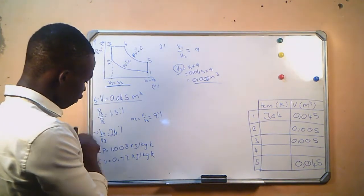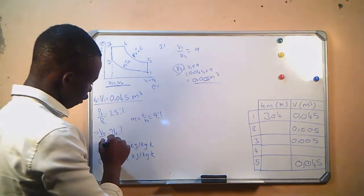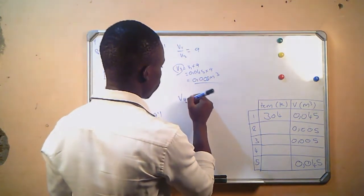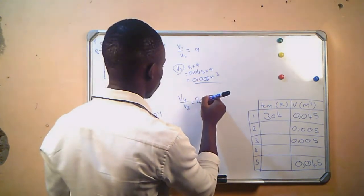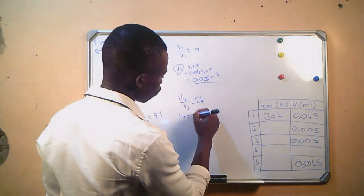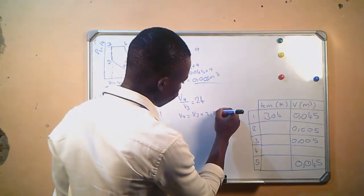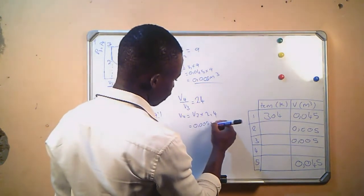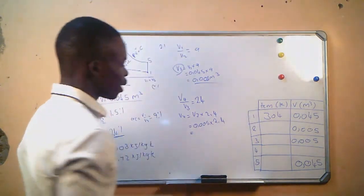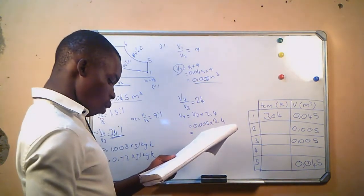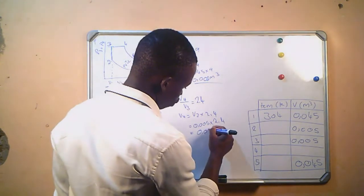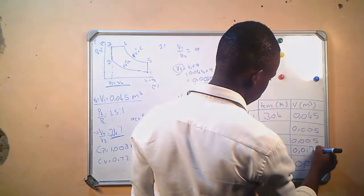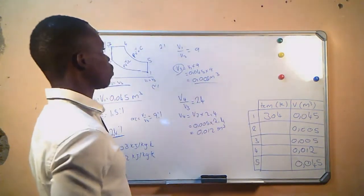We now look for V4 using the information linking us to it. We have V4 divided by V3 equals 2.4, so V4 equals V3 times 2.4. That is 0.005 times 2.4, which gives us V4 as 0.012 cubic meters. We record that value and we are done with question number 1.